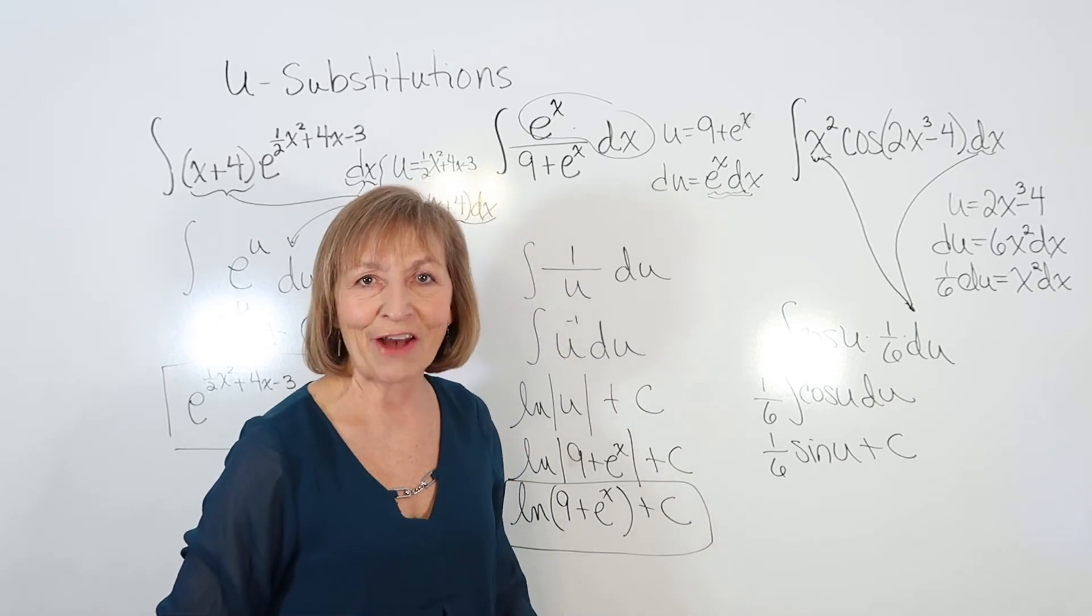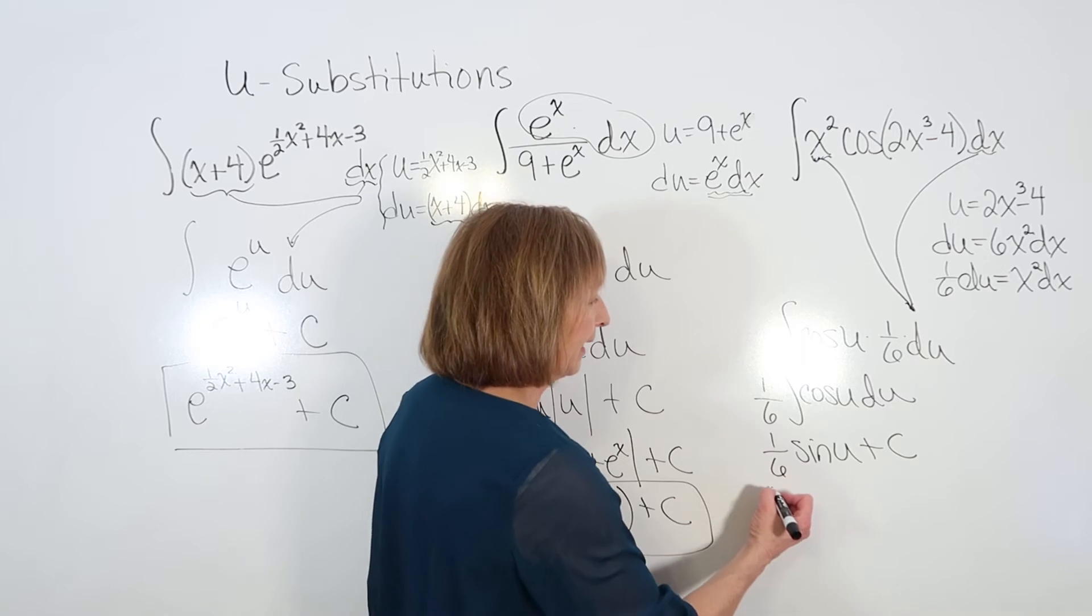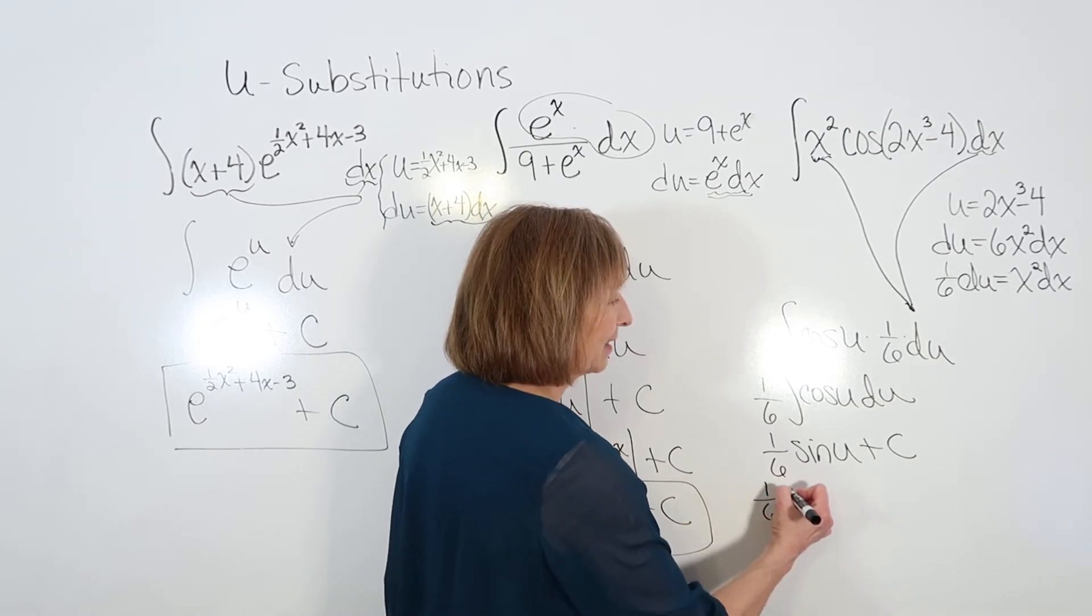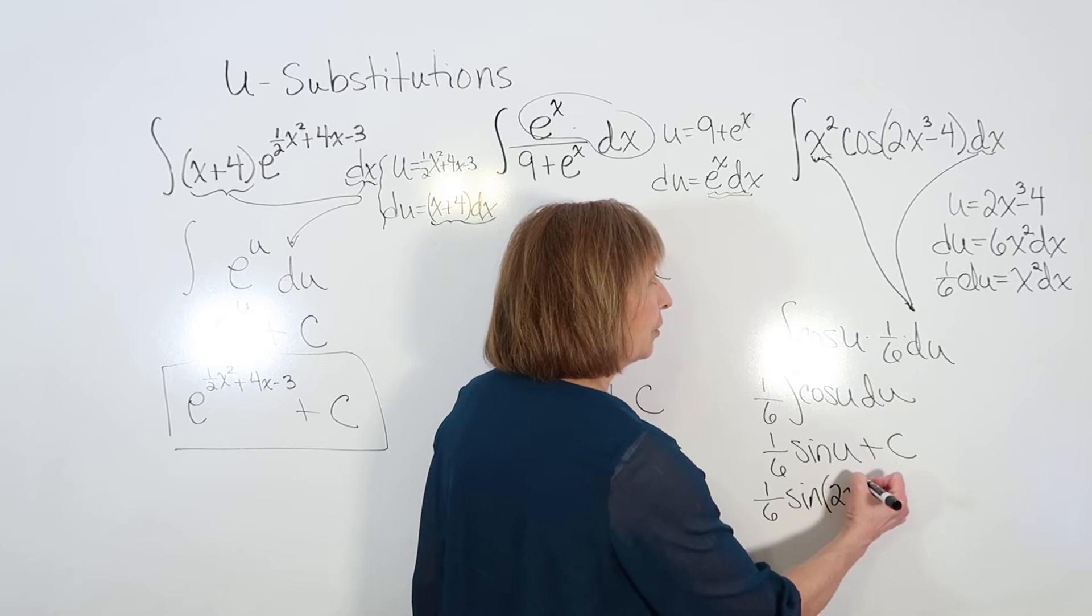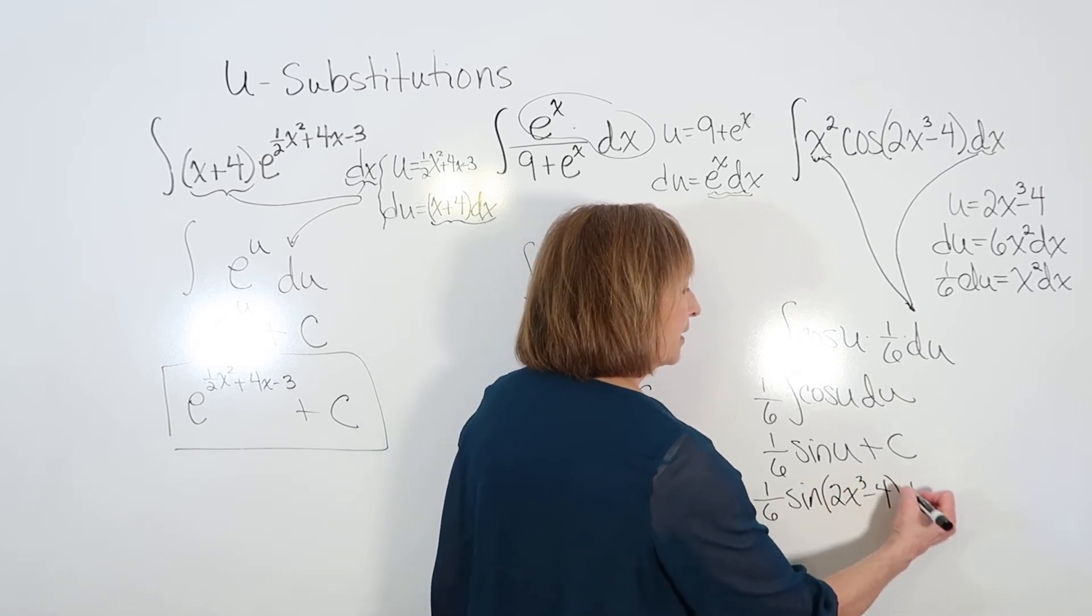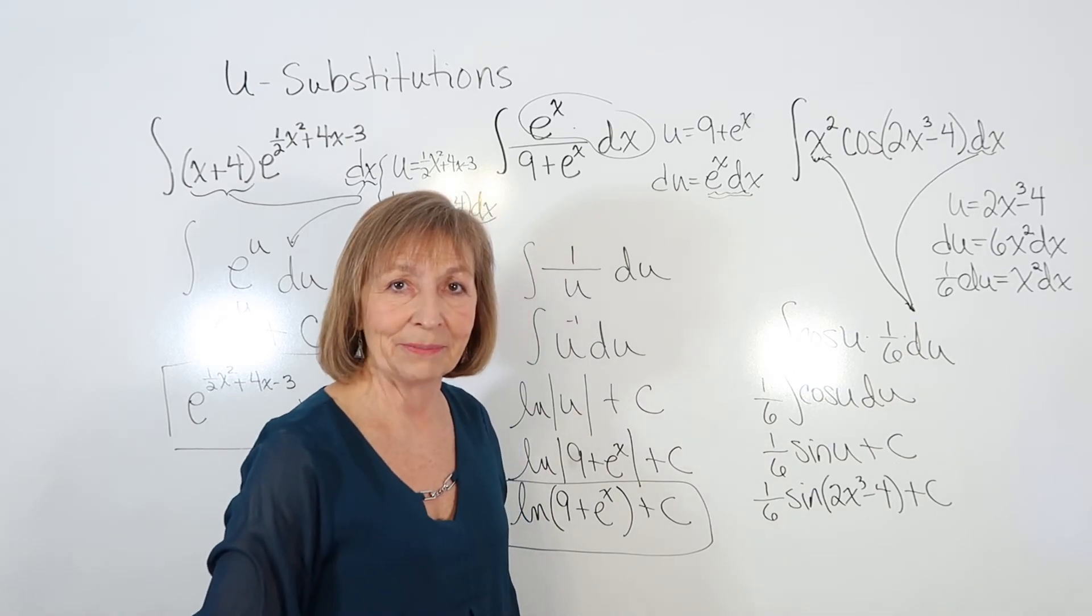And then to finish off, you take out the u and put the expression it represented back in. So we have 1/6 times the sine of that 2x³ minus 4 plus c. Remember what you've written down and what you've assigned it to be.